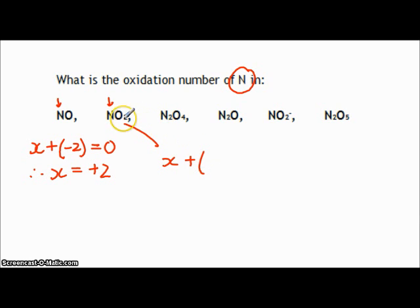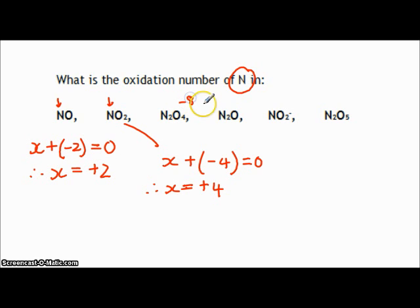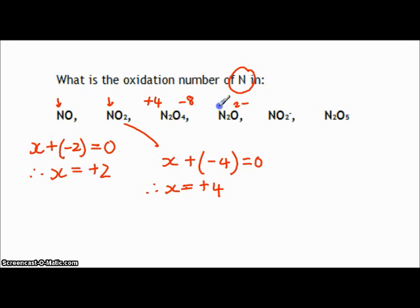In NO₂: two oxygens, each minus two, gives minus four; neutral compound so it equals zero, therefore x is plus four — oxidation number of nitrogen is plus four. In N₂O₄: oxygen is minus two and there are four of them, giving minus eight total, so two nitrogens must be plus eight, meaning each nitrogen is plus four. In N₂O: two oxygens give minus four, so two nitrogens must be plus two, meaning each nitrogen is plus one.